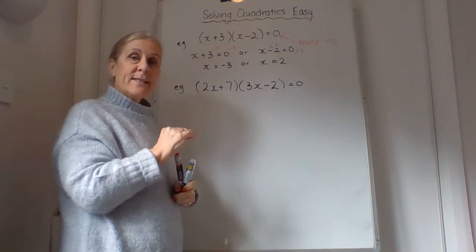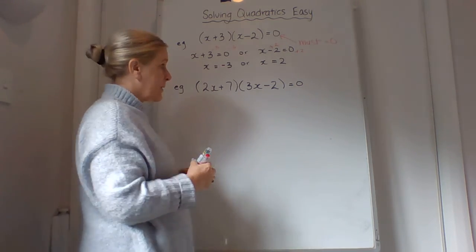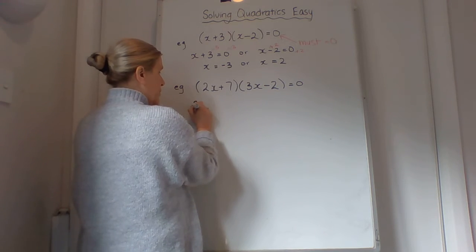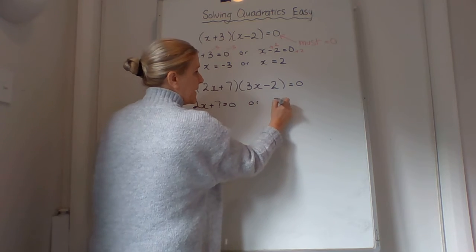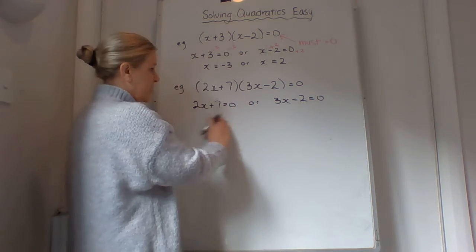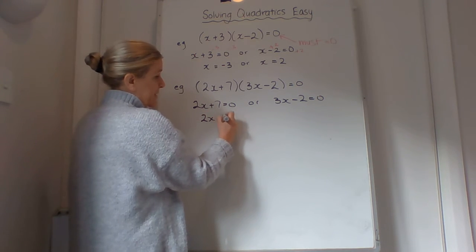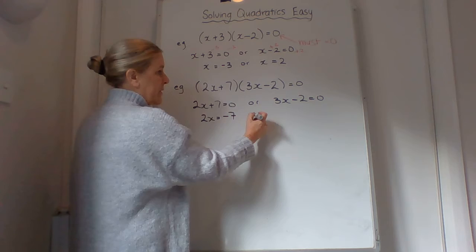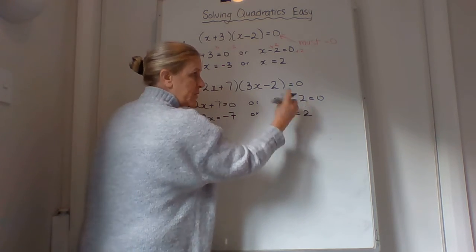So what happens then is that we've, again, got to have one or the other equal to 0. So we've got 2x+7 = 0, or 3x-2 = 0. So a bit tricky because we've got to solve an equation. 2x = -7, take away 7 from both sides, or 3x = 2, add 2 to both sides.